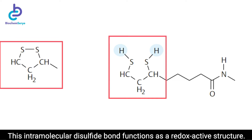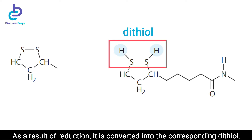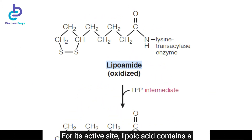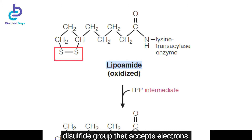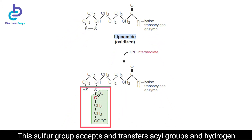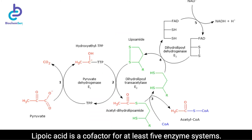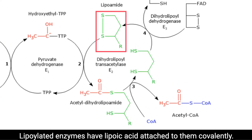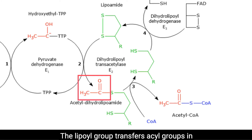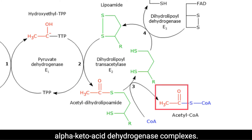This intramolecular disulfide bond functions as a redox-active structure. As a result of reduction, it is converted into the corresponding dithiol. For its active site, lipoic acid contains a disulfide group that accepts electrons. This sulfur group accepts and transfers acyl groups and hydrogen ions during oxidative decarboxylation of alpha-keto acids. Lipoic acid is a cofactor for at least five enzyme systems, with lipoylated enzymes having lipoic acid attached covalently. The lipoyl group transfers acyl groups in alpha-ketoacid dehydrogenase complexes.